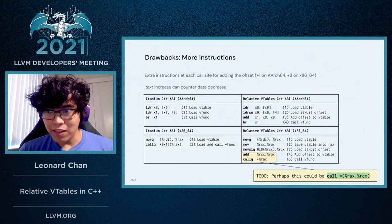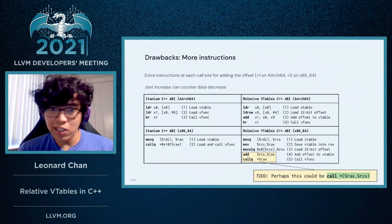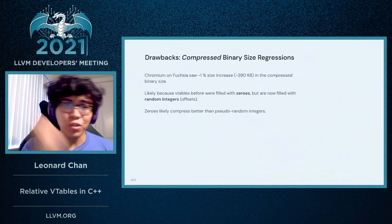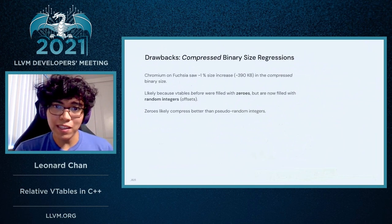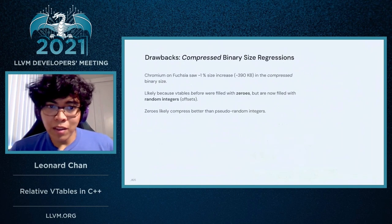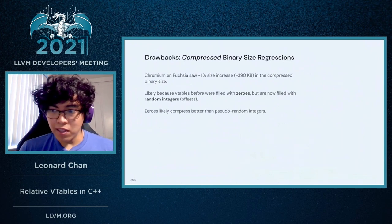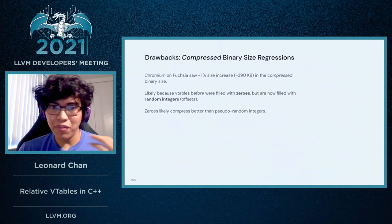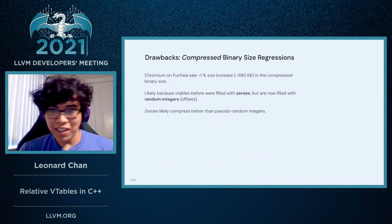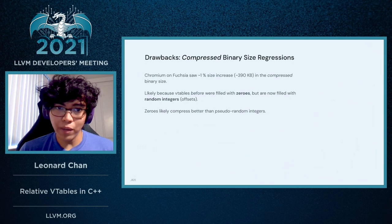It's worth noting that this .text increase can counter the .data decrease. One drawback that we didn't see until after rolling this out was that compressed binaries can see some size regressions. This is likely because within a binary as a file, it's actually just filled with zeros inside the VTables. But now, these VTables are filled with random integers, which are the offsets, and when compressing, a sequence of zeros compresses a lot better than a sequence of pseudo-random integers.